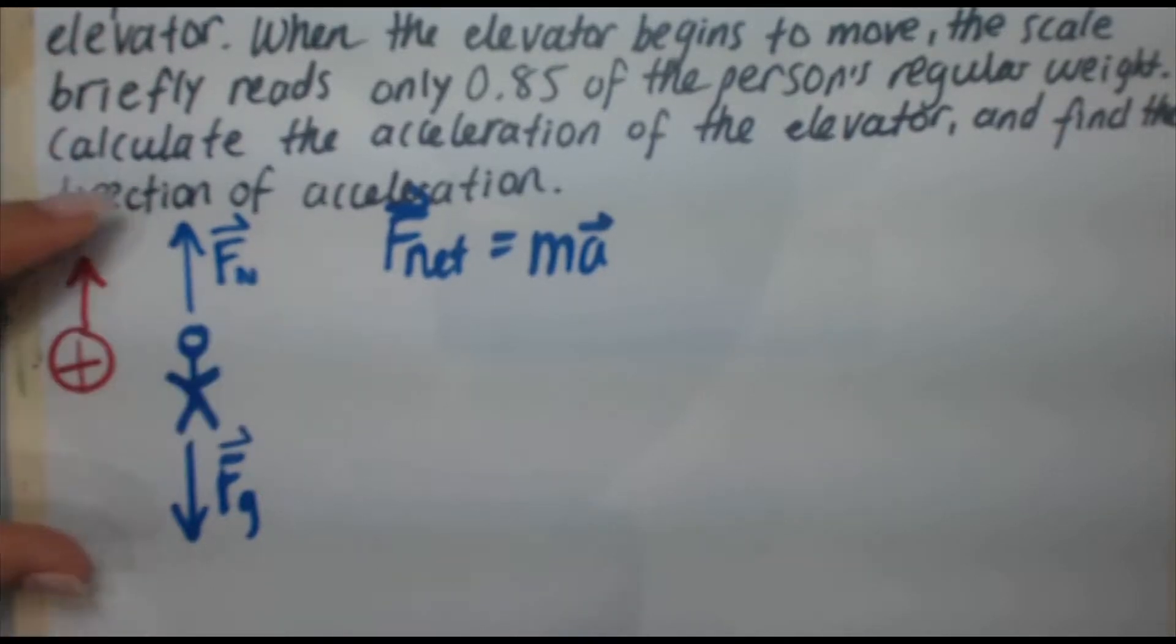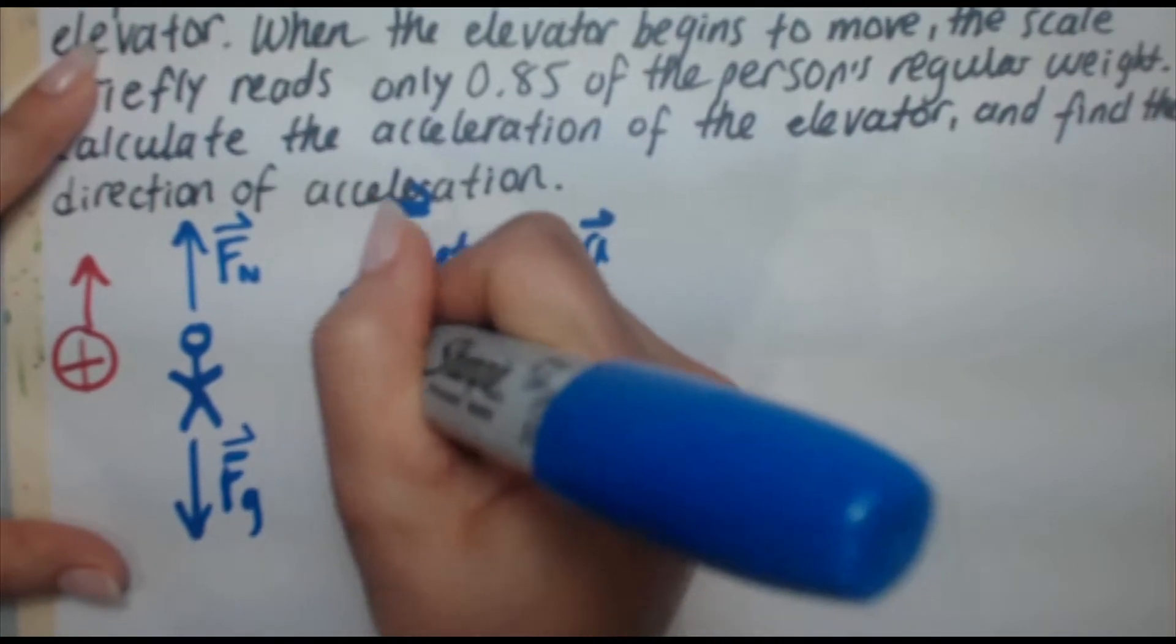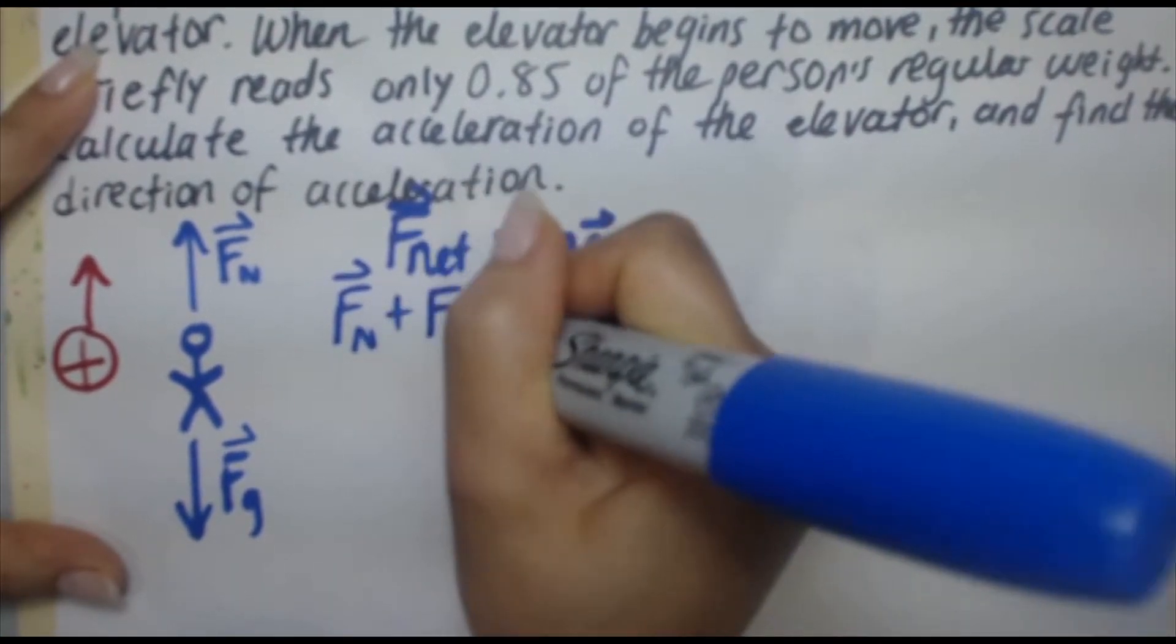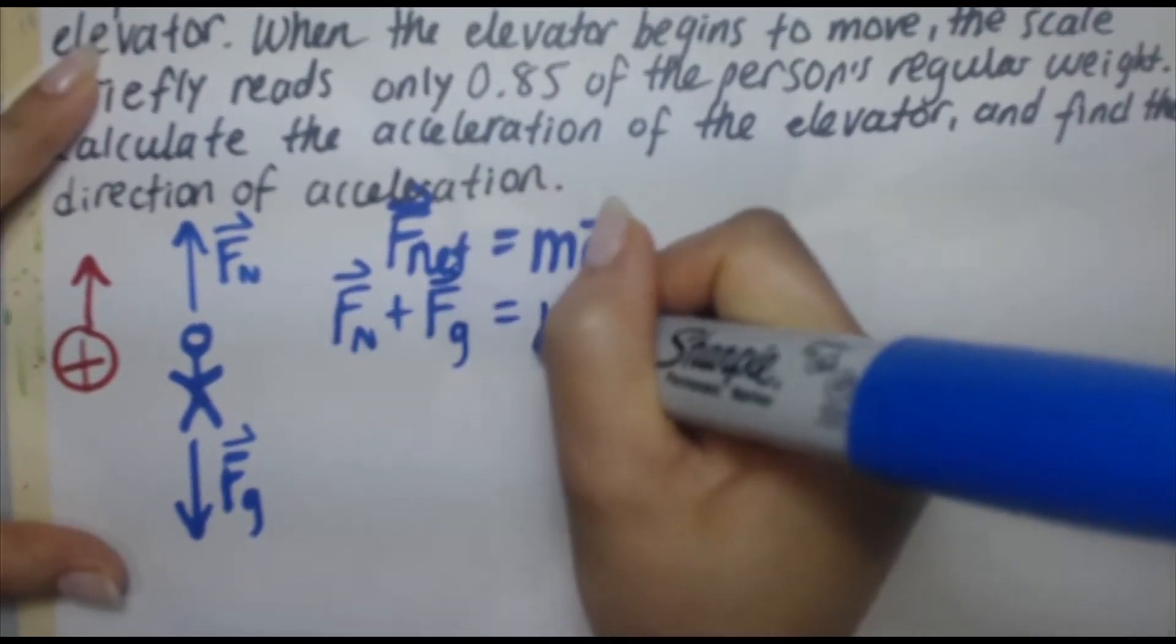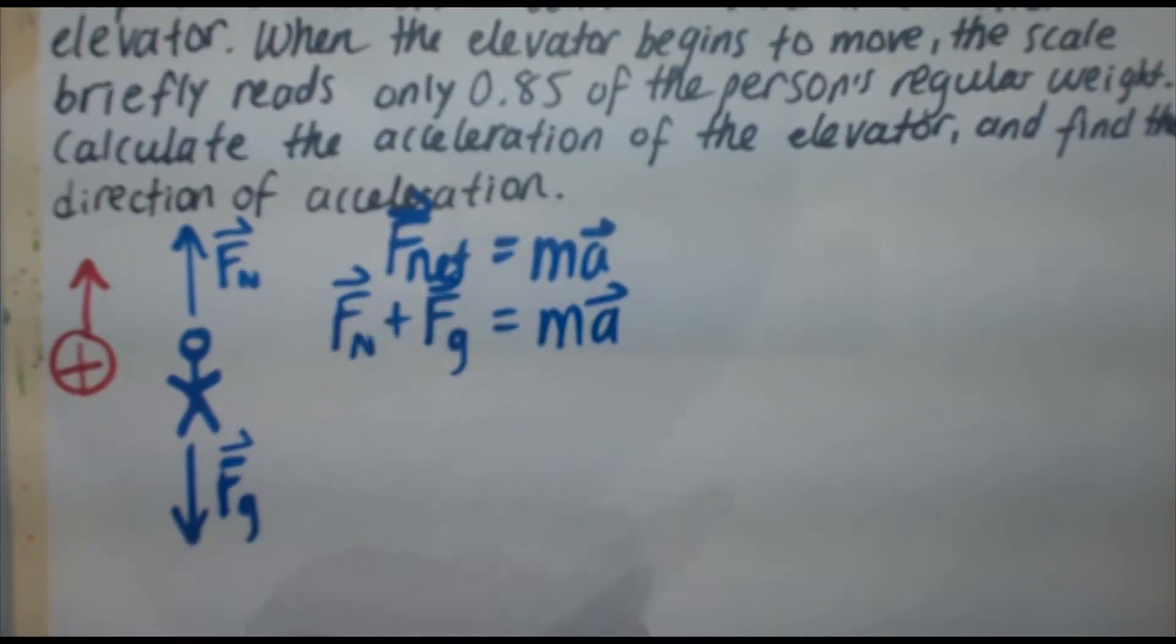Okay, now what forces are acting on this person? Well, the normal force and the gravitational force. So, F_n plus F_g equals ma. Now, the reason I put a plus is because I still have maintained those vector symbols on top of the Fs. Vector addition does not imply linear addition. That means it really depends on the direction that the vector is going or the force in this case is going.